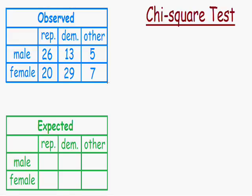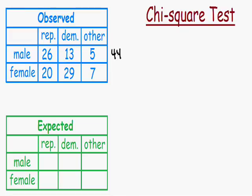The first thing I like to do is calculate the total number in each row and each column. Let's calculate the total number in the row of males. We have 26 male Republicans, 13 male Democrats, and 5 other males. 26 plus 13 is 39, and 39 plus 5 is equal to 44. So we have 44 total males.